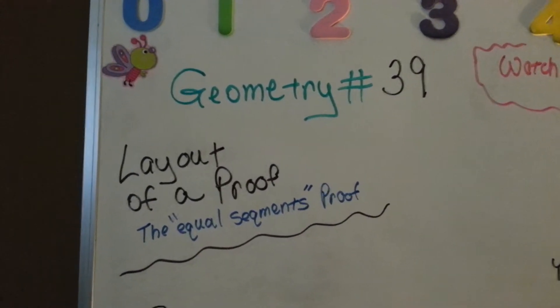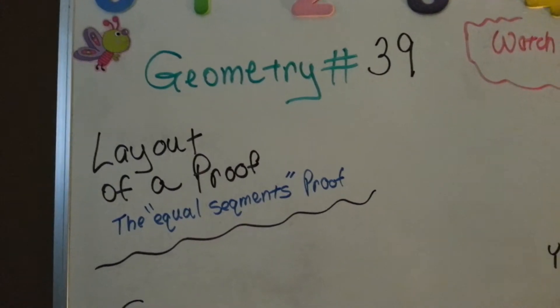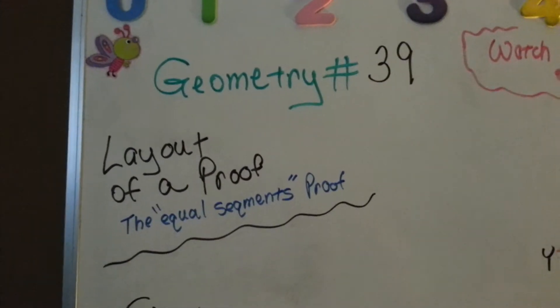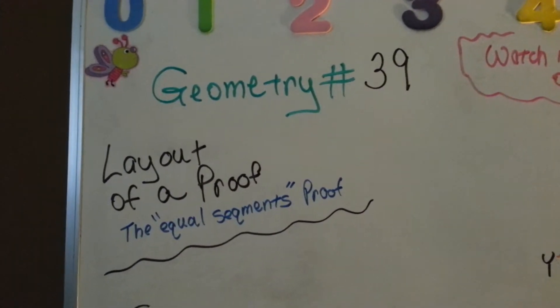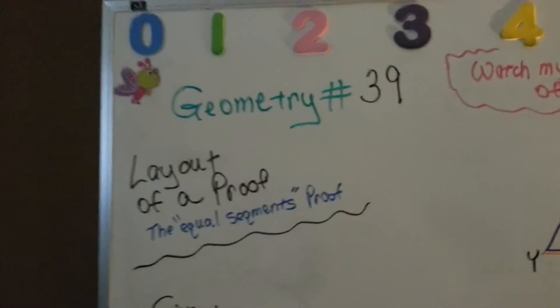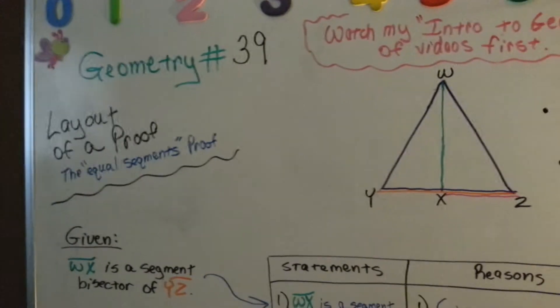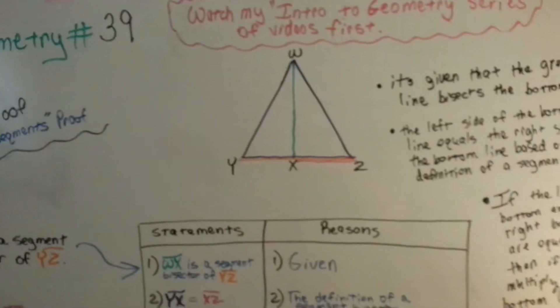This is the layout of a proof, the equal segments proof. If you saw the last video, number 38, you saw a layout of a proof for midpoints. I'm giving you examples that you can base your work off of so you can know how to do this.